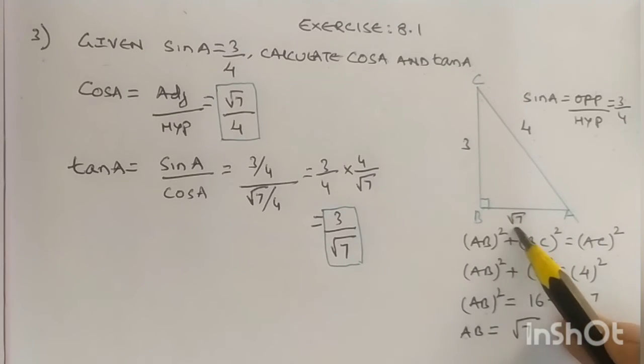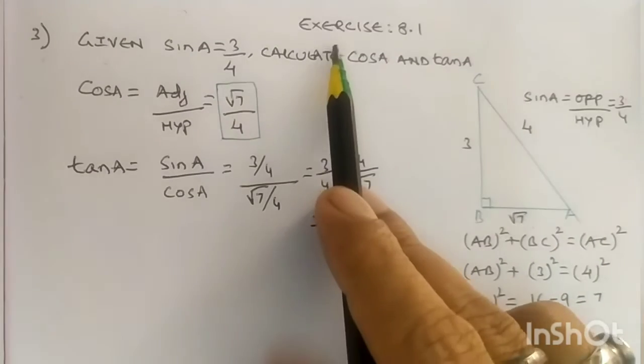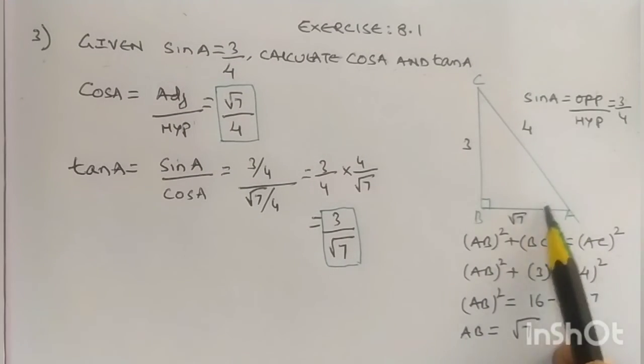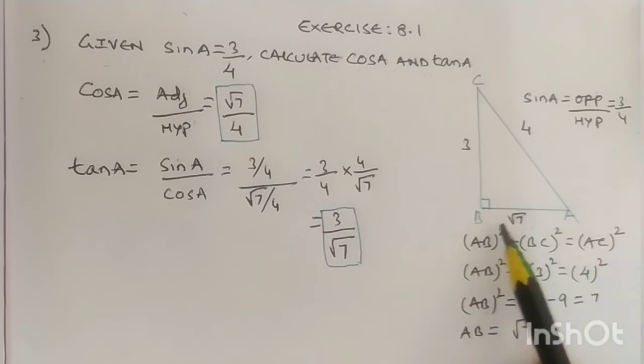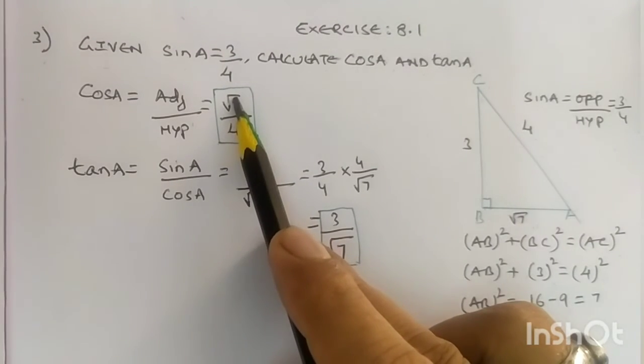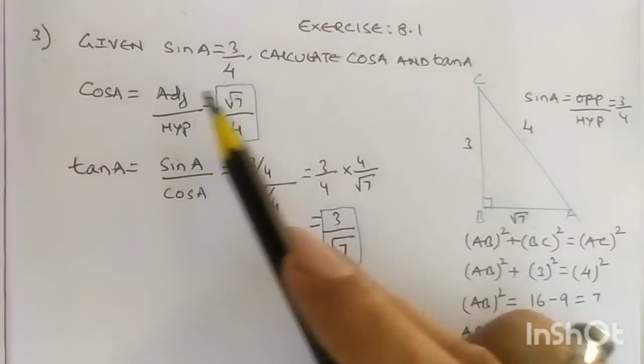Now we have to calculate cos A. We know that cos A equals adjacent upon hypotenuse. What is adjacent to angle A? That is side AB, which equals root 7. The hypotenuse is 4, so cos A equals root 7 upon 4. This is our answer for cos A.